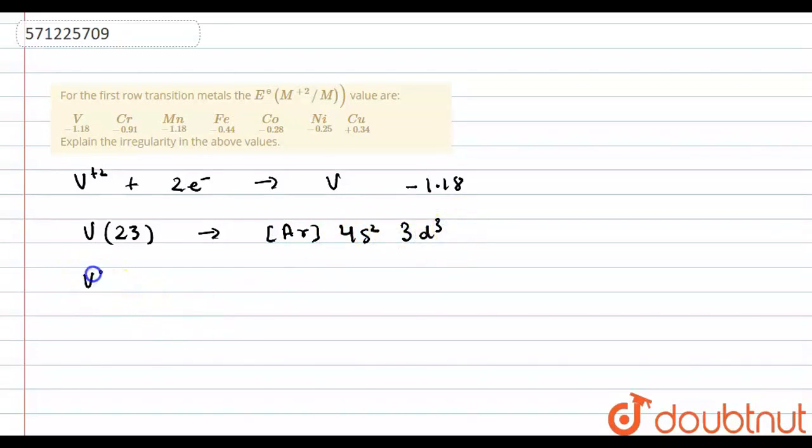Now, if we want to calculate the electronic configuration of V+2 ions, two electrons will be removed from 4s. So, we can write the configuration as argon and we have 3d3. Now, we just need to add two electrons to this. So, we can see that the electrode potential comes out to be -1.18.